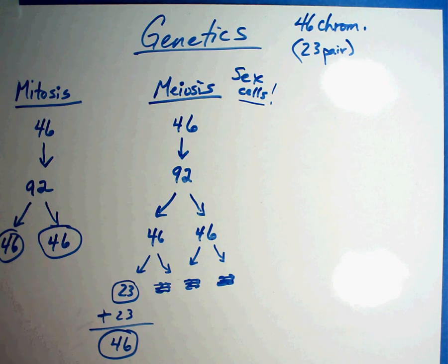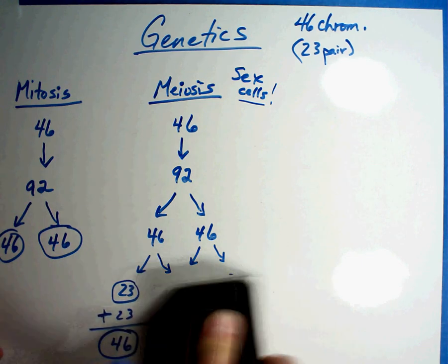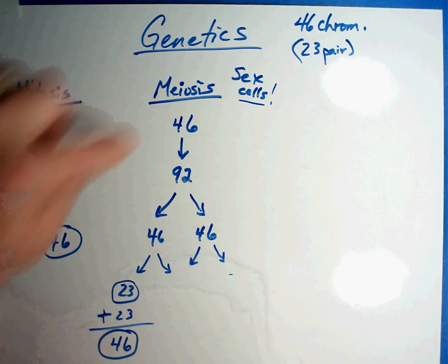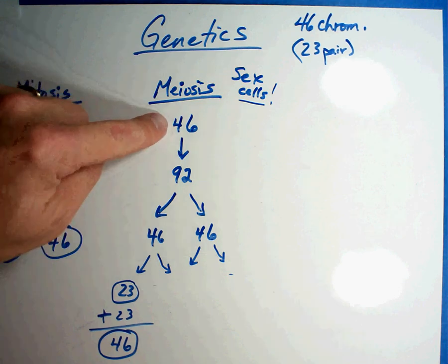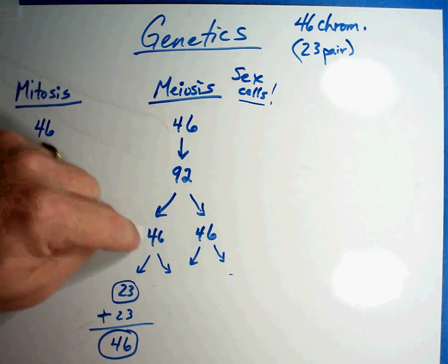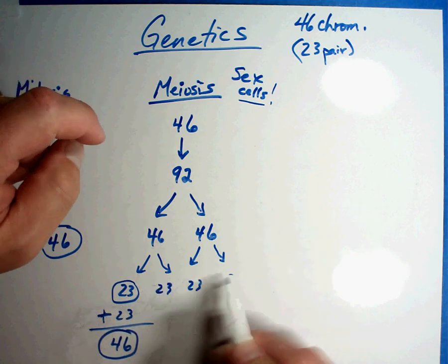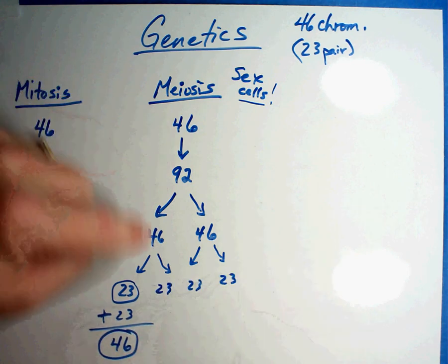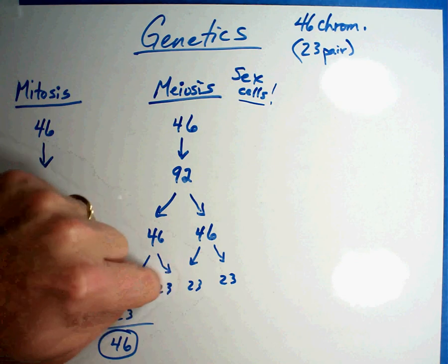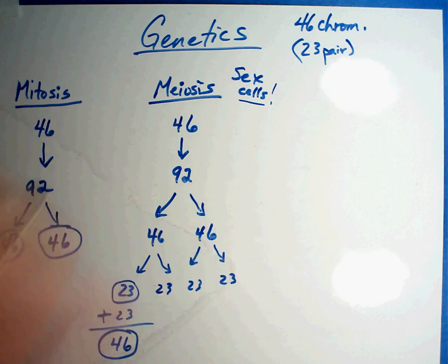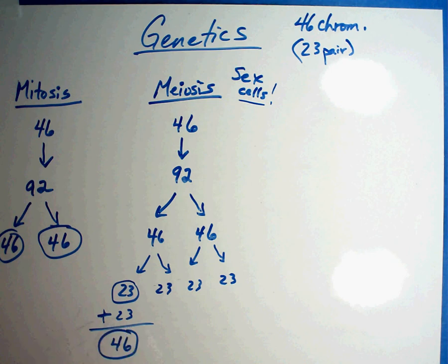We get half our chromosomes from mom and half from dad. Now, just quick review. If this was a male, double your DNA, split and split again in which you get half the chromosomes found in four sperm. Well, there's millions and millions of sperm that have to be produced and one will be one that would fertilize the egg.